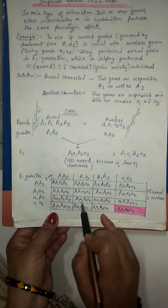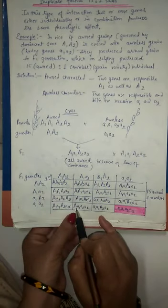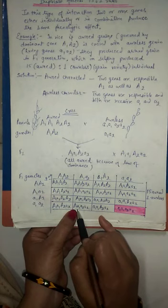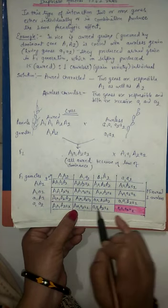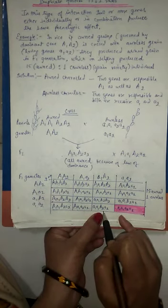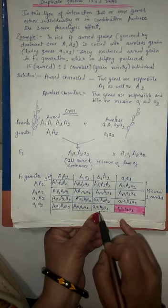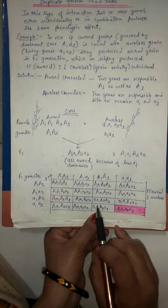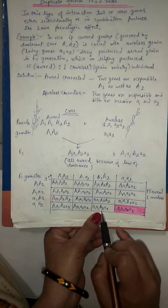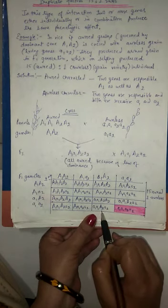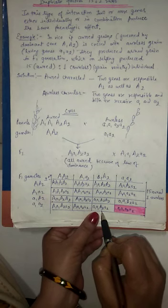But individually where only capital A1 is present, is also producing orned variety. So we can see that both A1 and A2 capitals are able to produce the duplicate effect of producing orned variety.